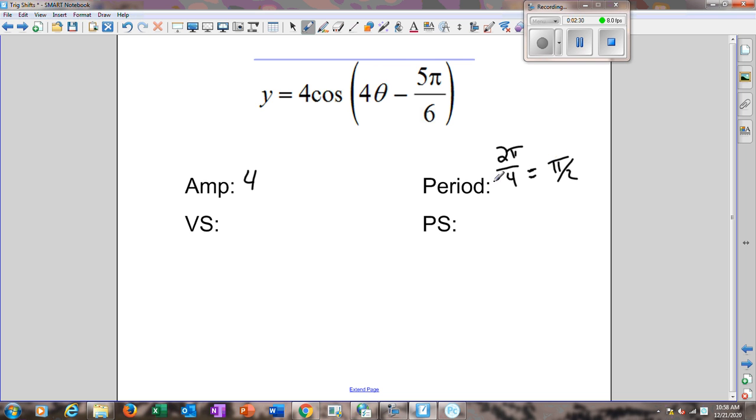So now that our period is π over 2, we can find a vertical shift. In this case, there's no number added outside of here, so we have a vertical shift of 0. And then we have our phase shift. When we looked at how we found our period, we took the original period, which was 2π, and divided it by 4. So for our phase shift, we also have to divide that by 4. So our phase shift is currently 5π over 6 to the right, which means that I have to do 5π over 6 times 1 fourth. This gives us 5π over 24 for our phase shift.